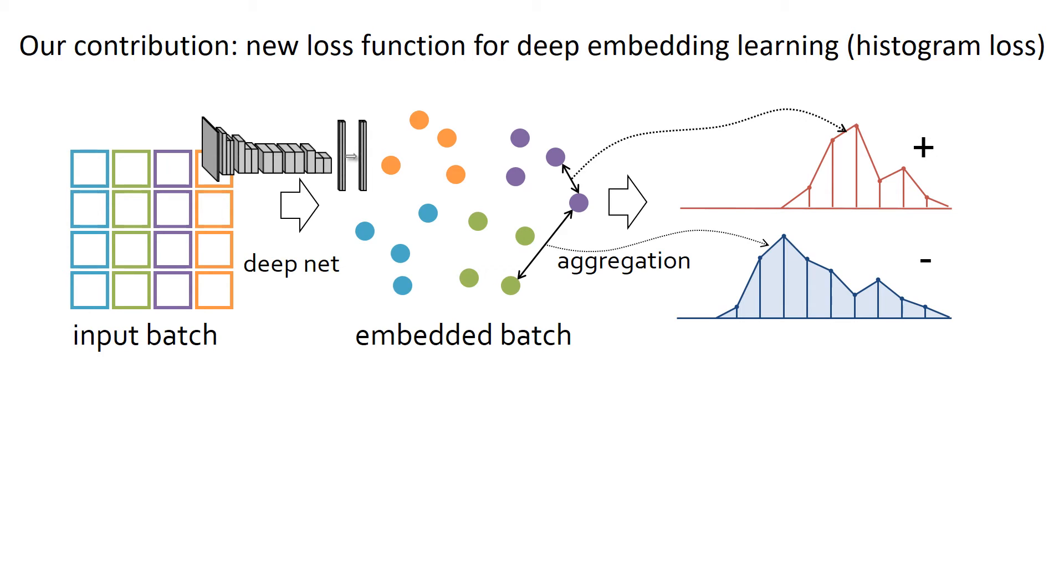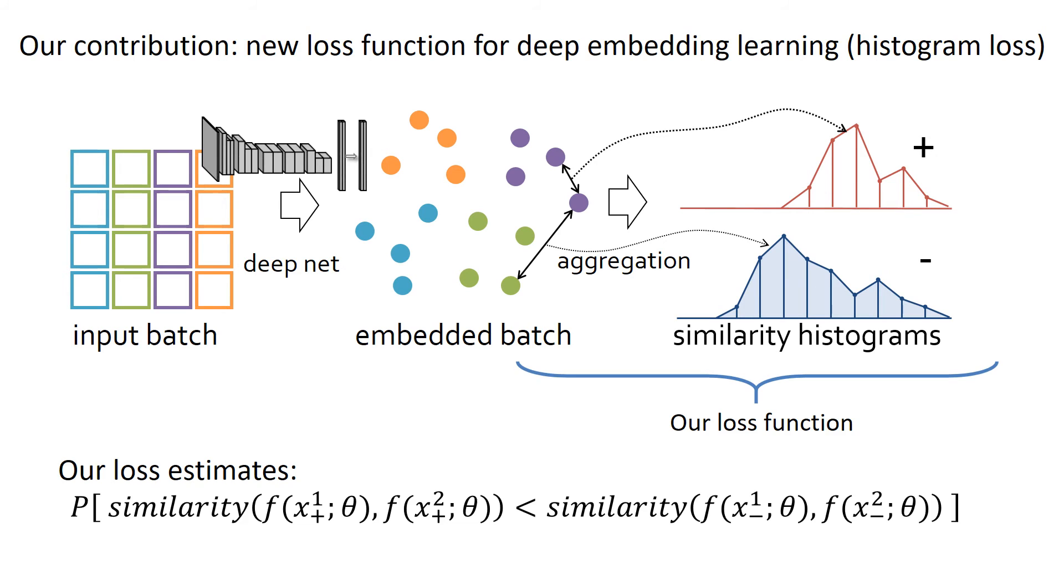Using the aggregated similarity histograms, our loss can estimate the probability that the similarity of a matching pair is lower than the similarity of a non-matching pair.